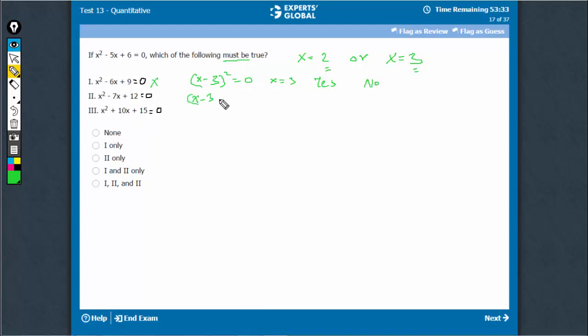This is x-3 into x-4. So this is x equal to 3 or x is equal to 4. When x is equal to 3, this will definitely be equal to 0 because one of the two is 0.